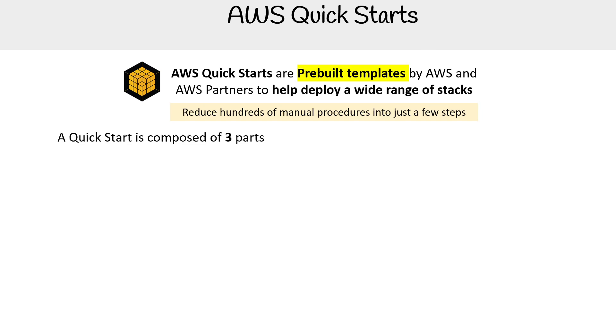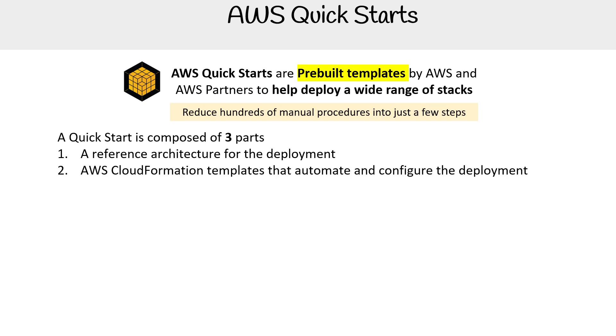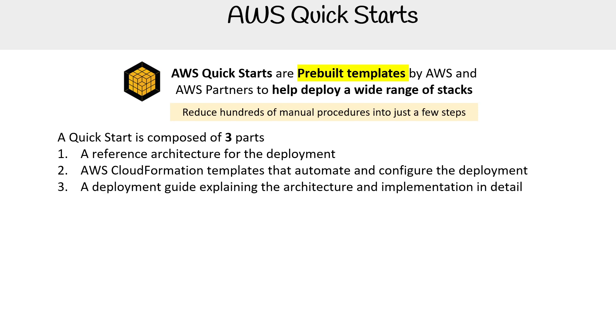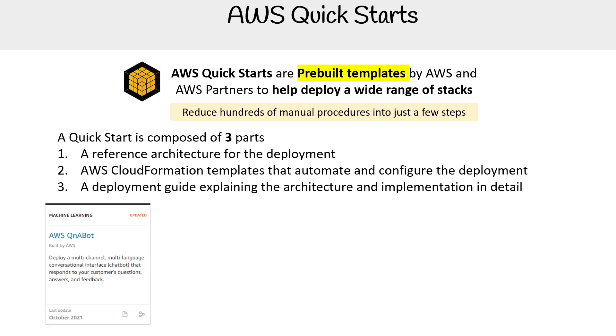A Quick Start is composed of three parts: a reference architecture for the deployment, an AWS CloudFormation template that automates and configures the deployment, and a deployment guide explaining the architecture, implementation, and detail.